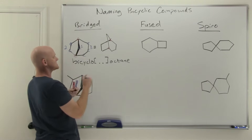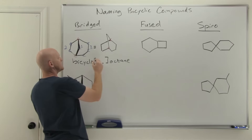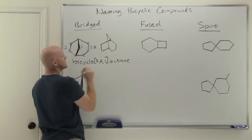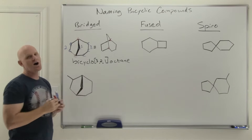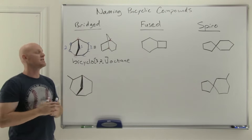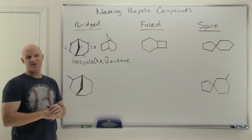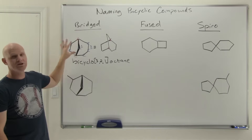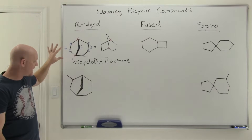Going around the left side there are two carbons in between the bridgeheads; going around the other side there are three; and the top pathway has just one carbon between bridgeheads. So those three numbers in descending order give us bicyclo[3.2.1]octane. That's a simple bridged bicyclic.